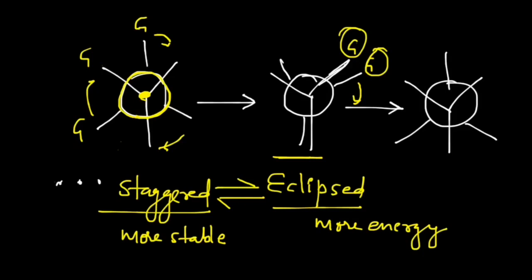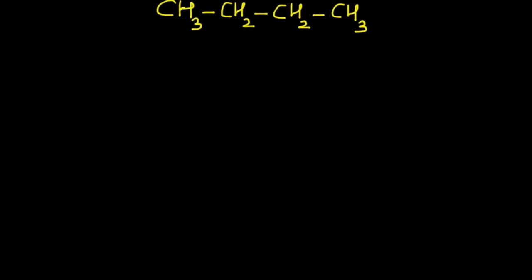There are more than just two conformations — let's explore this with an example of normal butane. Normal butane has four carbon atoms. The first thing I am going to do is draw the Newman projection of normal butane, looking down the C2–C3 bond. This will be the front carbon and this will be the back carbon.